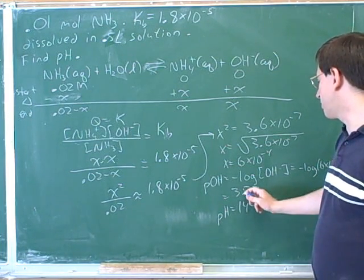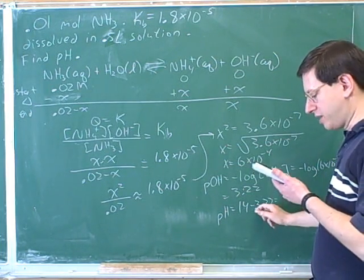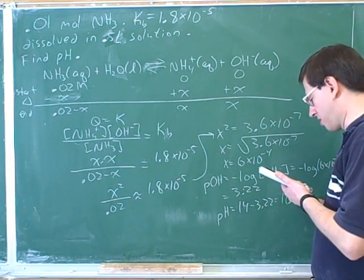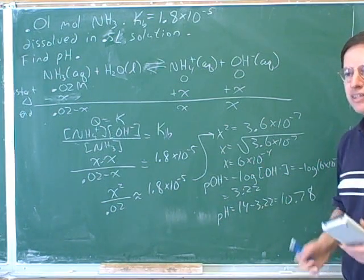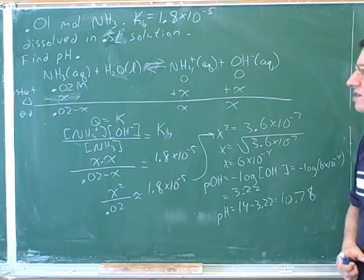And, it was good that you saw that the answer wasn't 3.22, but 14 minus 3.22, which is 10.78. Which we expect is a basic solution.